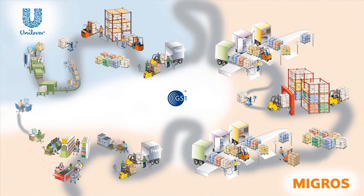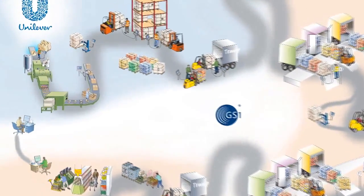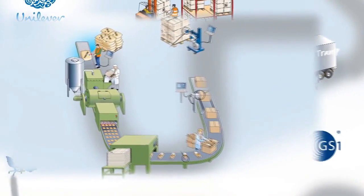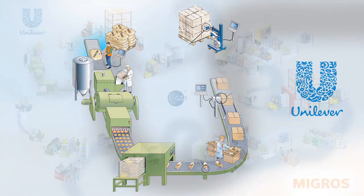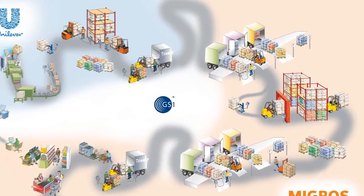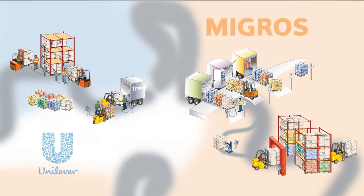This is a typical supply chain that is representative for many industries. The use of the SSCC starts right here in production at Unilever. Goods are produced and packaged into logistic units used for storage and transport. The goods are then shipped from Unilever to the distribution center of Migros.